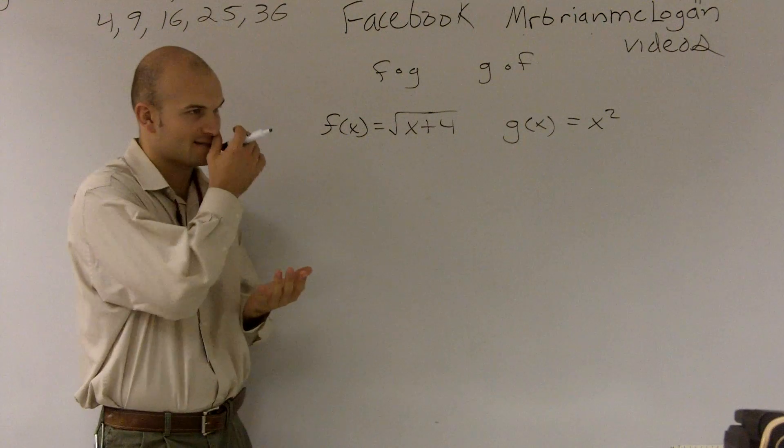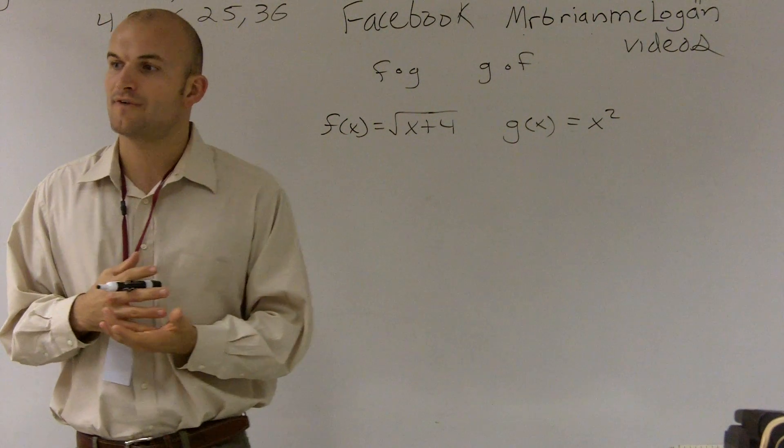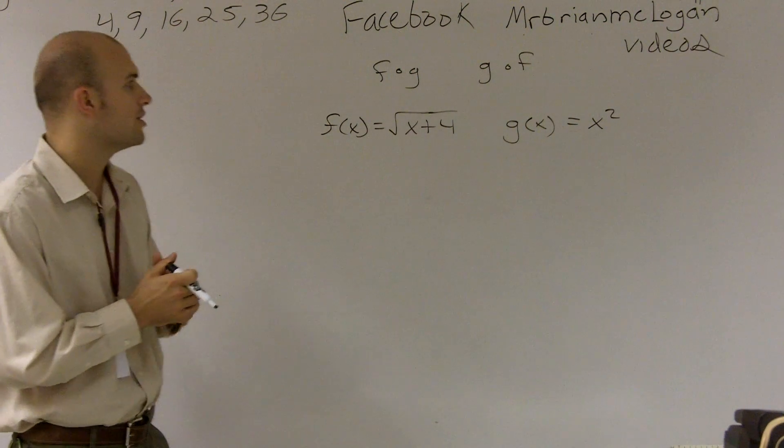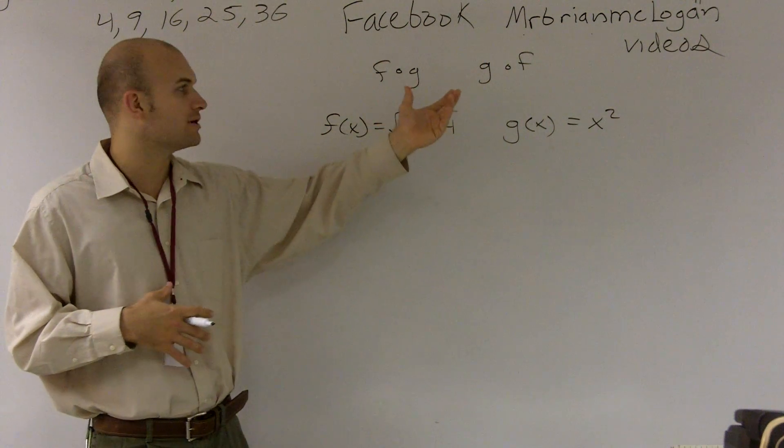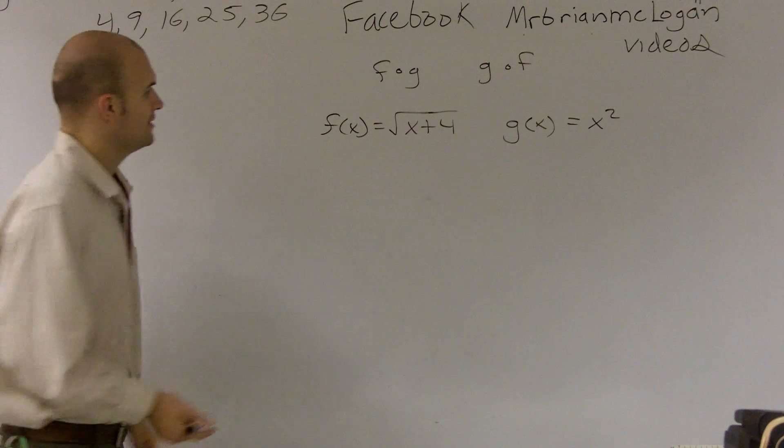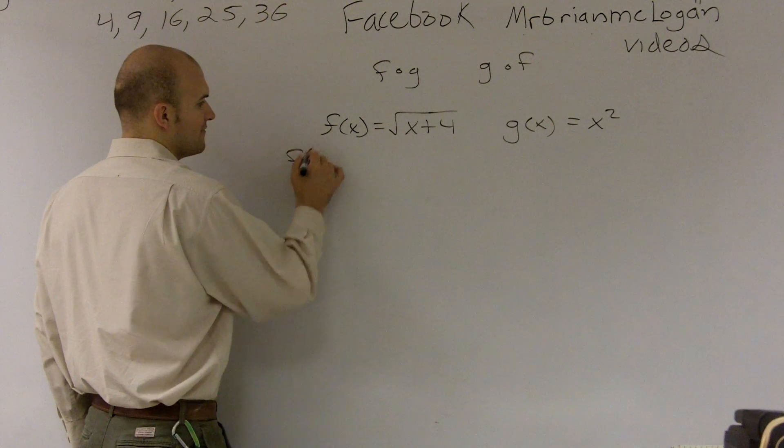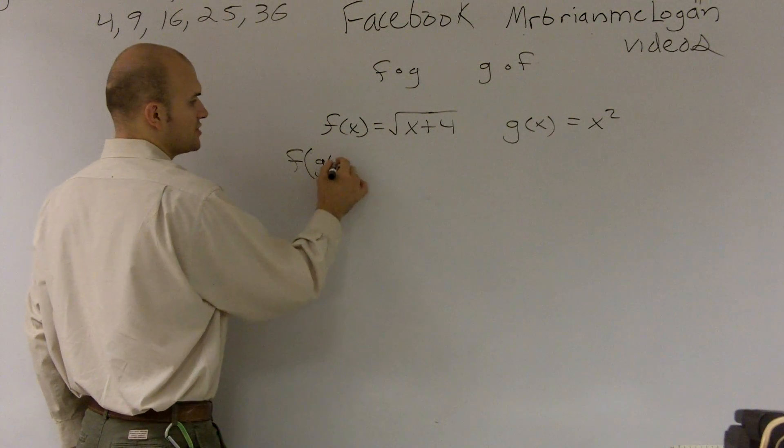What we need to be looking at is what we're going to call a composition of functions. Pretty much, what we're doing is we're going to plug one function into another function. So when we say f of g of x, or a lot of times we call this fog, what we're doing is we're taking our function f of x, and we're going to plug in our g of x function.